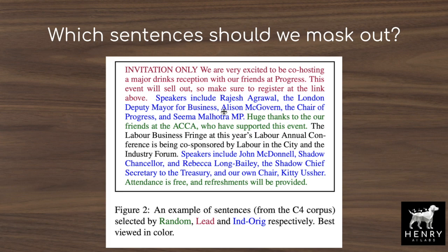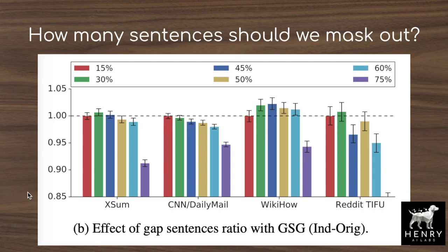The ablation on gap sentence ratio shows that masking out 30% of sentences generally performs best, with 45% also performing well. 15% is more computationally efficient, while 75% masks out so much of the document that there may not be enough signal left to reconstruct the masked sequences.